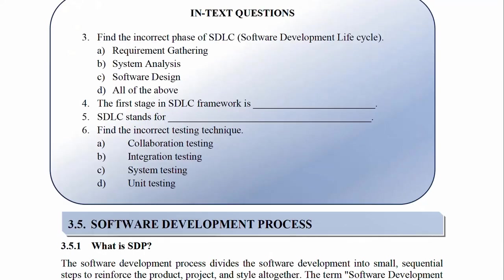In-text questions: Number 3 — Find the incorrect phase of SDLC: A. Requirement gathering, B. System analysis, C. Software design, D. All of the above. Number 4 — The first stage in SDLC framework is dash. Number 5 — SDLC stands for dash. Number 6 — Find the incorrect testing technique: A. Collaboration testing, B. Integration testing, C. System testing, D. Unit testing.